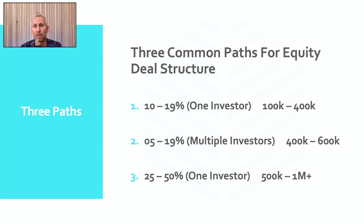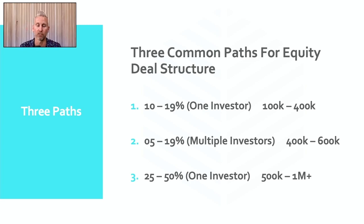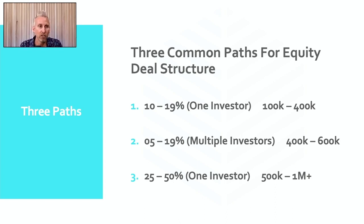Let's talk about these three different paths. Options one and two are going one direction at the fork in the road — not personally guaranteeing — and option three is personally guaranteeing. Starting with option one: it's commonly 10 to 19%. You could obviously offer someone less — three, four, or 5% — but is that really even worth it? We're talking about a big deal here with numbers that are really strong.